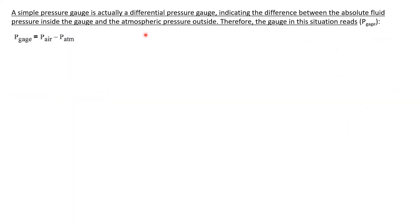Before continuing, we must consider what we're looking for. We were asked for the gauge pressure reading. A pressure gauge does not read the absolute pressure of the gas inside it — it is actually a differential pressure gauge. It reads the difference between the pressure inside and the atmospheric pressure on its outside. That is why we distinguish between gauge pressure and absolute pressure. So the gauge reading equals P_air minus P_atmosphere.